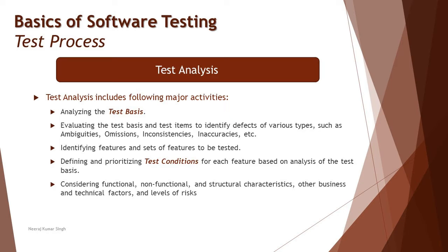We are talking about reviewing work products — reviewing the requirements and design — because the test basis can be anything from which we can derive test cases. For example, when reviewing requirements, the very first thing is to understand what exactly the expectation is. Until you understand the requirements, you may not be able to create test cases or ultimately test the system. While going through this, you raise your concerns — that's what you call the findings of your review process.